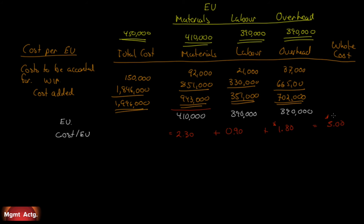The last thing we need to do is the cost reconciliation. We need a value for ending work in process inventory — we need this for the next period. And for the units that were transferred: we know 370,000 units were transferred and they're $5.00 a piece, so this is where we figure out our totals. Our totals should come to $1,996,000 if we did it right.